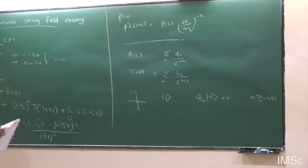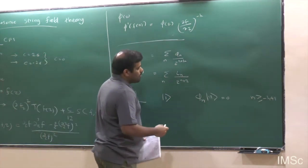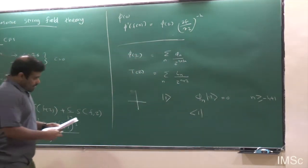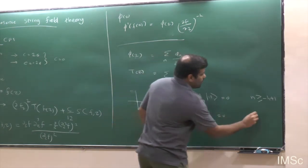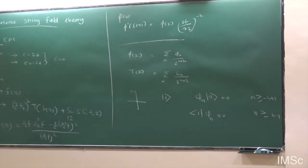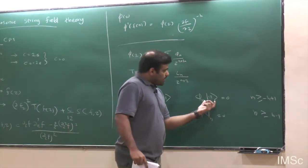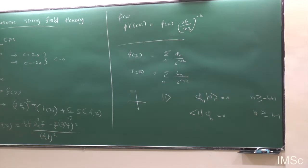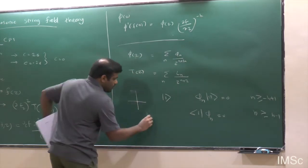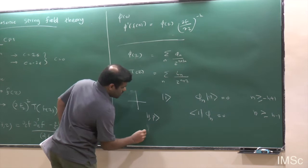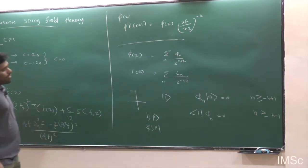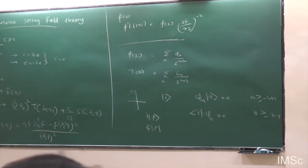You can define a corresponding vacuum at the future, denoted ket 1, which has the property that it is annihilated by φ_n with n ≥ H−1. This is your vacuum at the past and this is the vacuum at the future. You can also generalize this vacuum to carry some momentum, denoted 1_P.